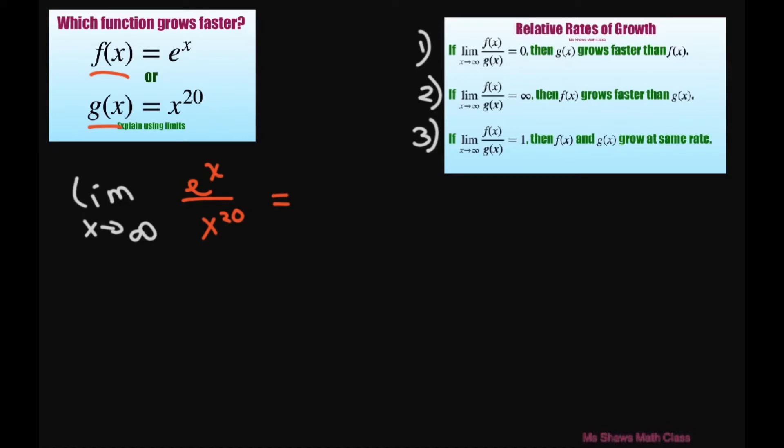Let's use L'Hopital's rule. This is the limit as x approaches infinity. The derivative of the numerator is e to the power of x and the denominator is 20x to the power of 19.